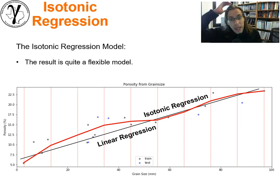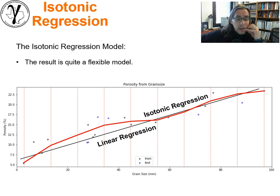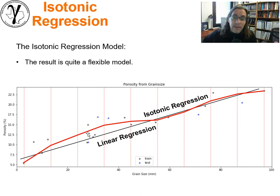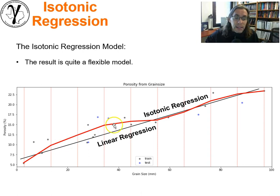The result is we get quite a flexible model. Instead of having our linear regression model creating a significant amount of bias at locations where we deviate from linear behavior, we now have a model flexible enough to fit and model those non-linear behaviors.